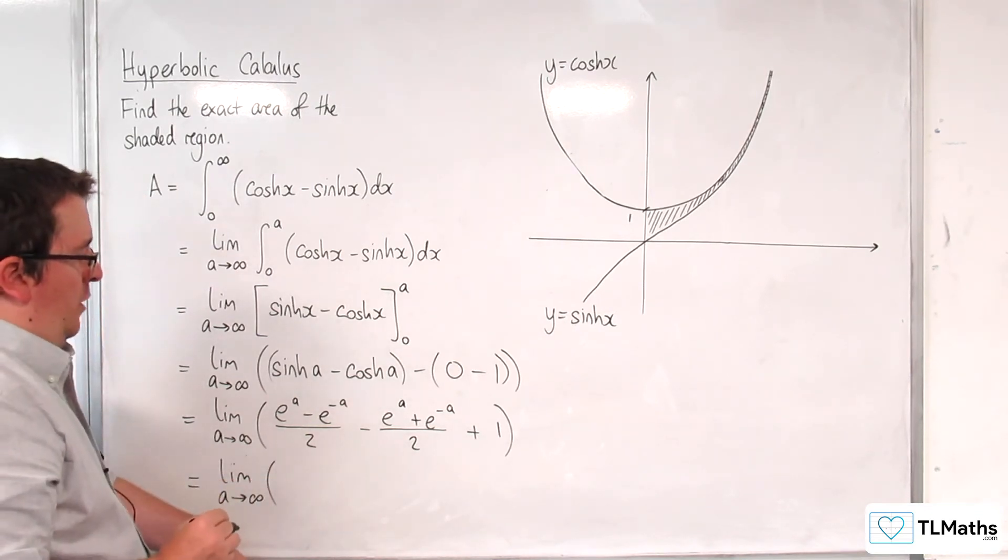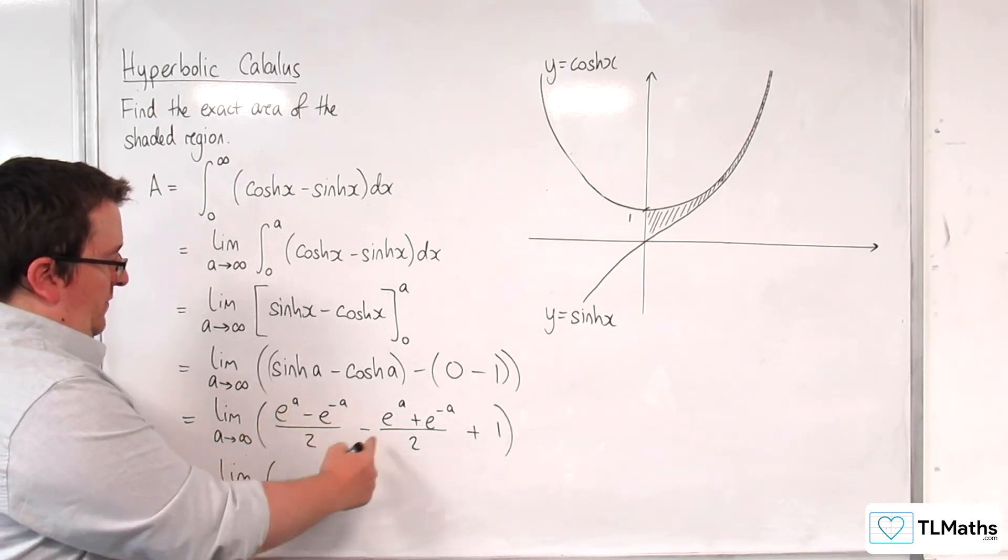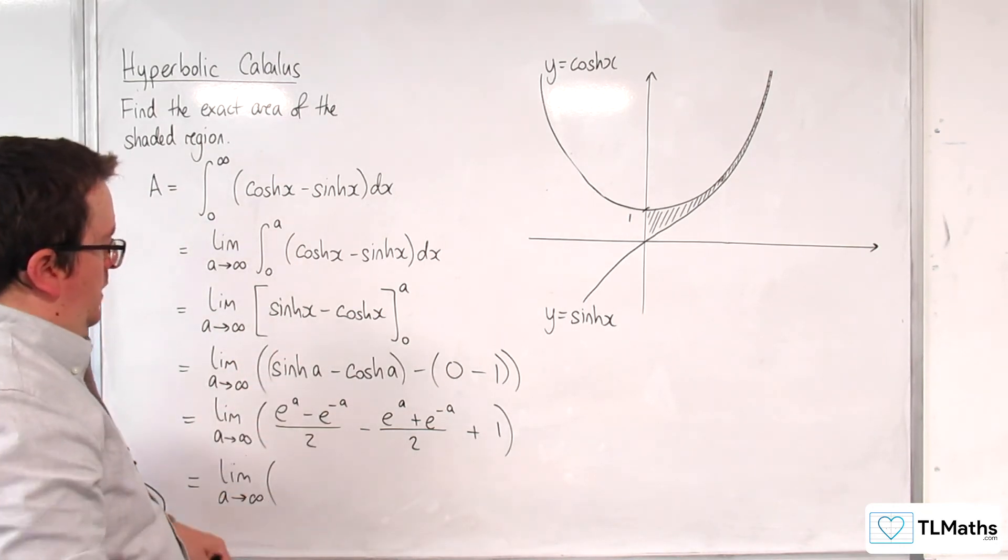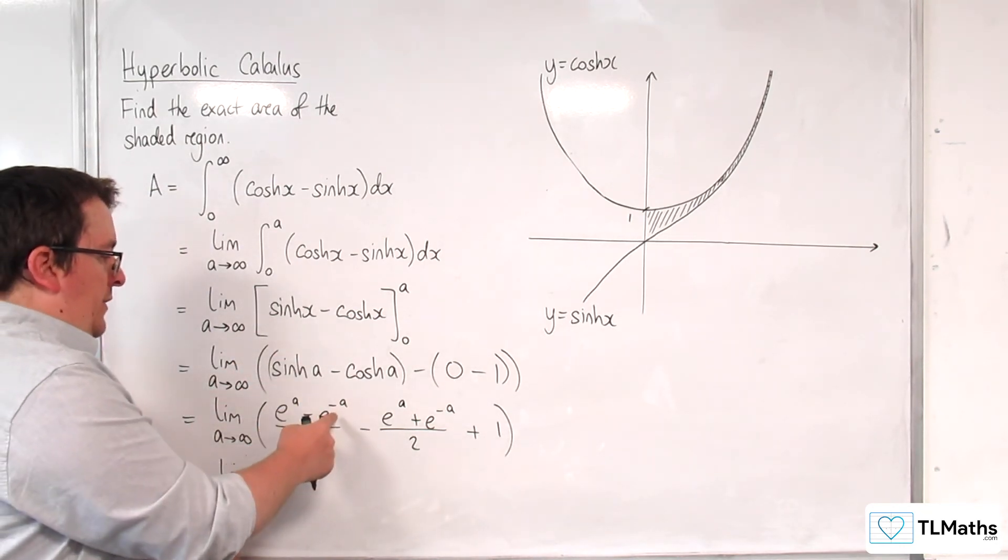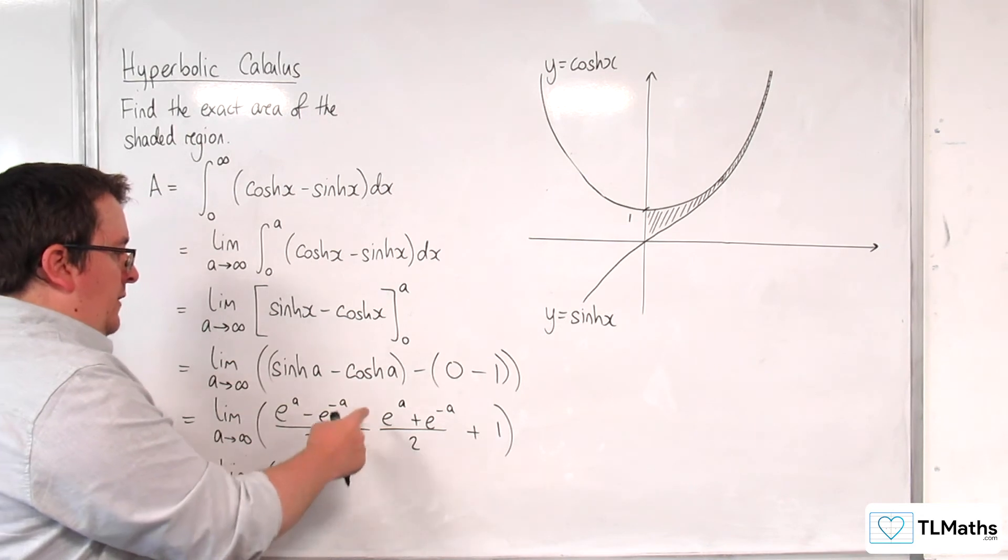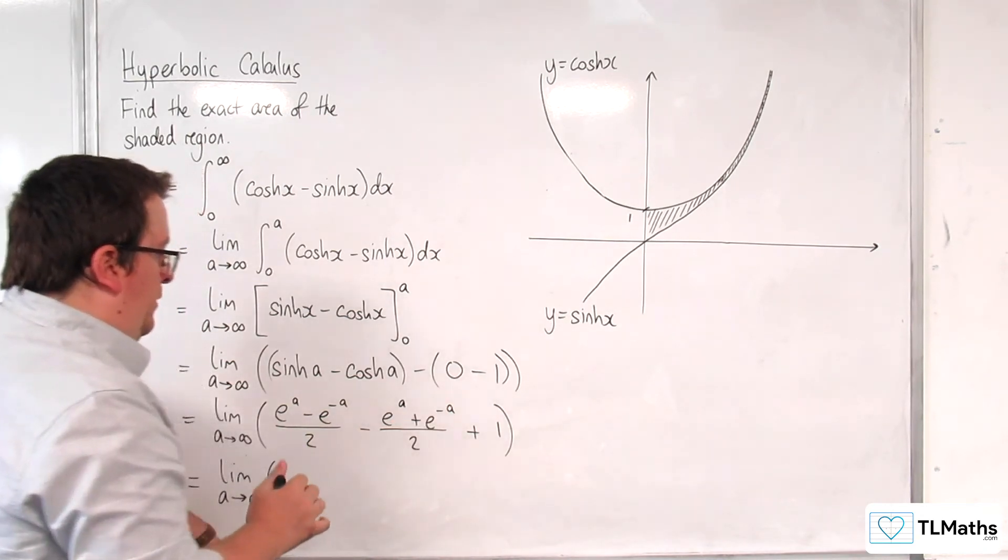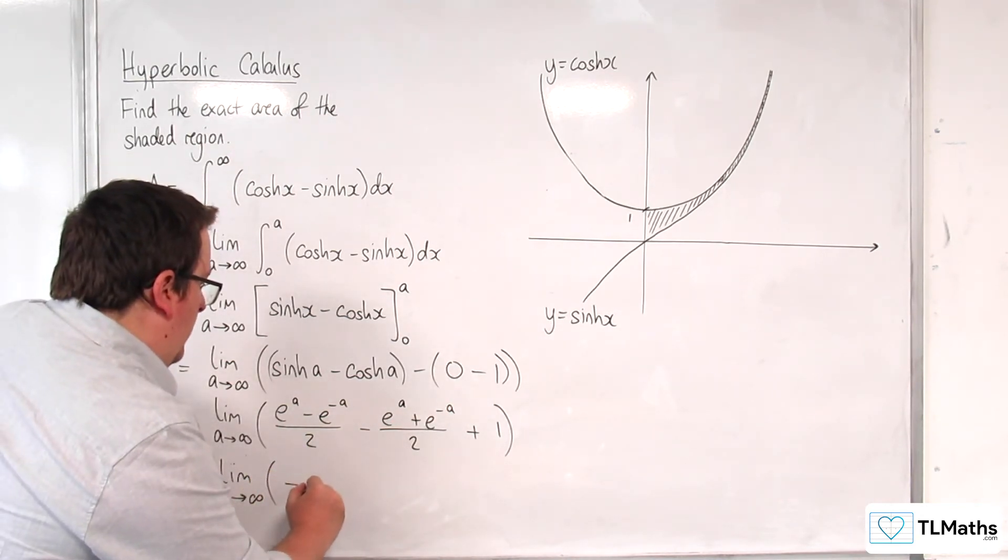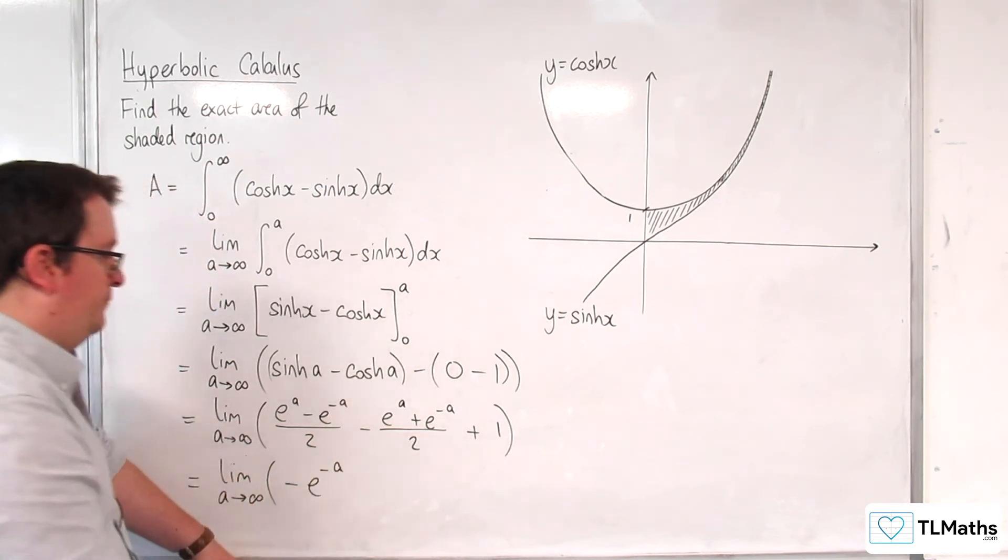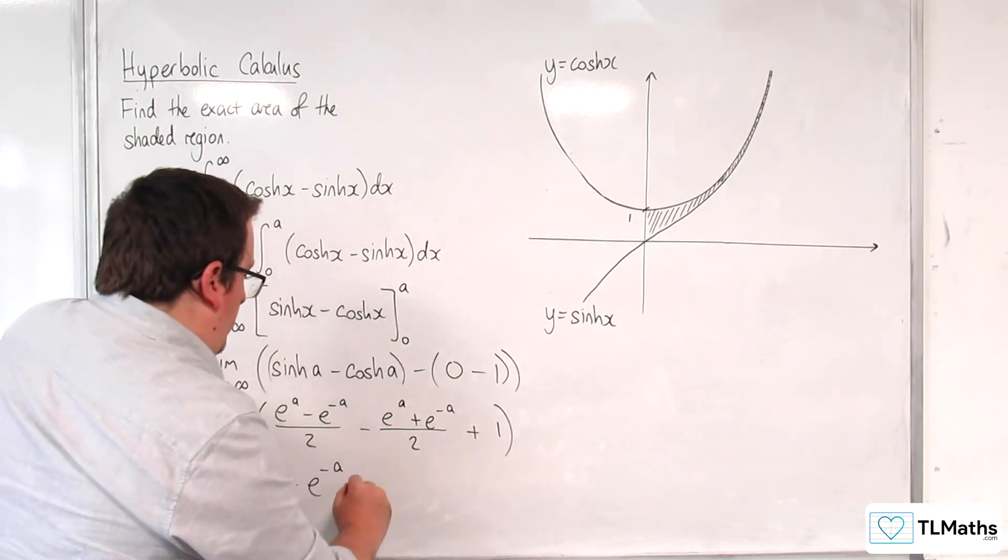So what have I got? Now I've got this e to the a over 2, take away e to the a over 2, so they're gone. We have minus e to the minus a over 2, take away e to the minus a over 2. So that means I've got minus e to the minus a, and I've got that plus 1 on the end.